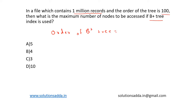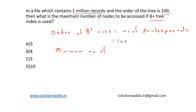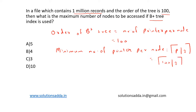The order of a B+ tree is equal to the number of pointers per node, which is equal to 100. The minimum number of pointers per node is equal to ceil(p/2), where p = 100, so ceil(100/2) = 50. So the minimum number of pointers per node is 50.